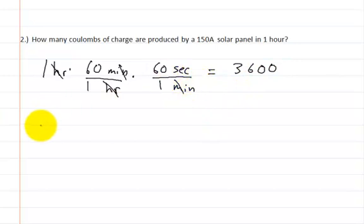And now we're going to use this formula, which is the current is equal to the charge divided by the time. And we're going to manipulate this one in order to solve for the charge. So the charge is equal to the current times the time.